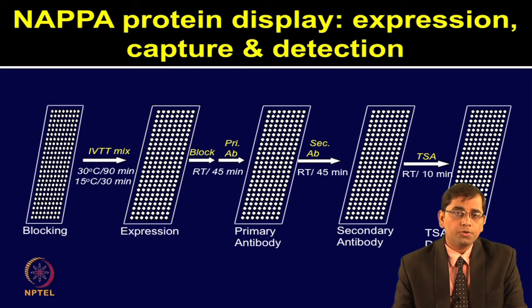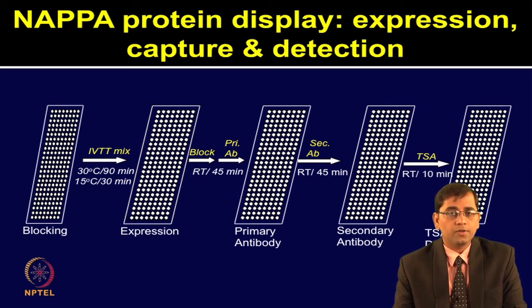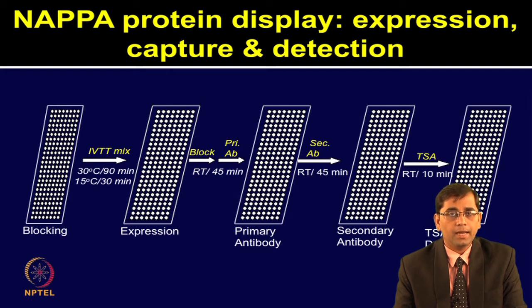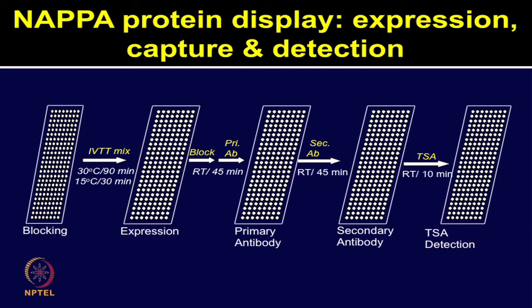Once the proteins are expressed, you need to wash all the lysates away from the chip. You can add milk in PBS or BSA. Once blocking is done at room temperature, primary antibody can be added. If your experimental aim is just to do quality control of protein expression, you can use anti-GST antibody; or if your aim is to look at autoantibody profiling, you can use serum from various patients. After incubation, corresponding secondary antibodies can be added, tagged with Cy3, Cy5, or tyramide signal amplification system. The schematic shows various steps involved: protein expression, capture, and detection.